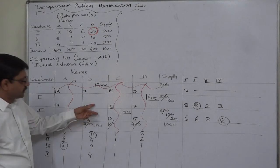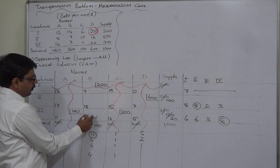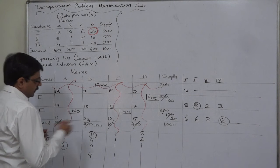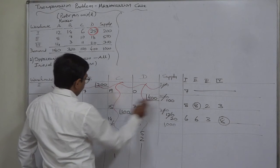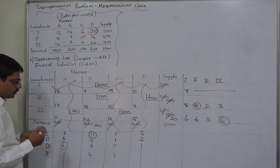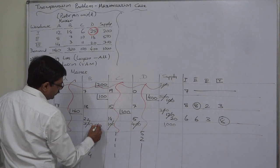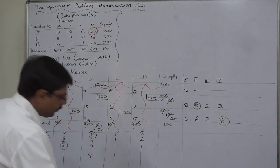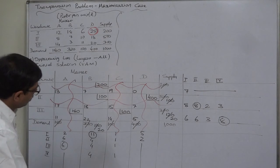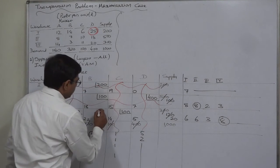Now we have only one row outstanding, so we need not calculate penalties. In the remaining column, find the cell with the least cost — that is 18. Demand is 120, supply is 100 — allocate 100. Supply of warehouse 2 is now exhausted. Out of 120 remaining demand of column B, we satisfied 100, so 20 is still unsatisfied. Cancel row 2 because supply is exhausted. In the last cell: demand is 20, supply is 20, and therefore allocation is 20.